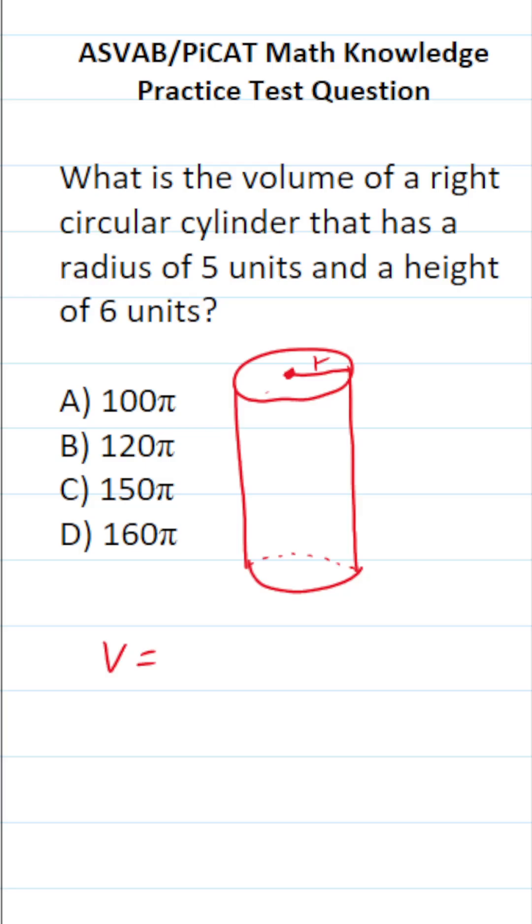Let's find the area of this circular face. The area of a circle is pi r squared. And what we're going to do is multiply that circular face's area by the height of the cylinder. And just like that, we derive the formula to find the volume of a right circular cylinder.